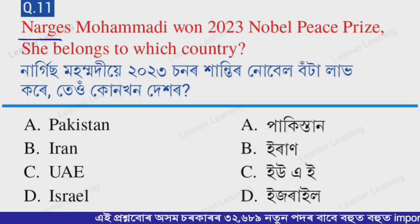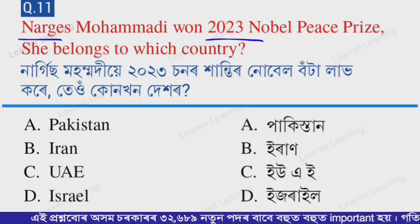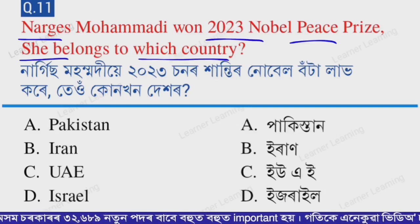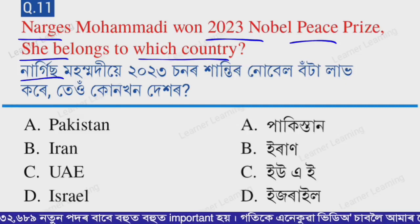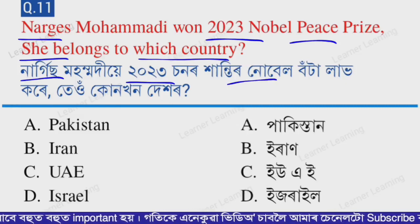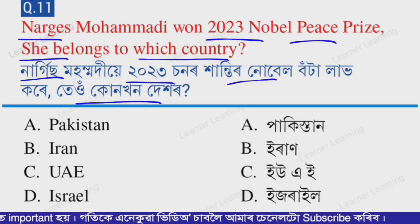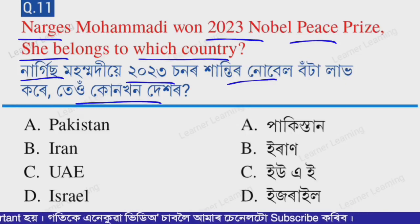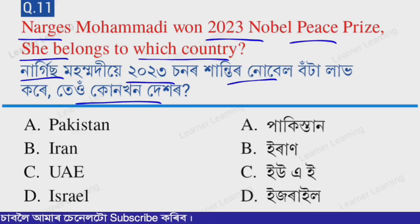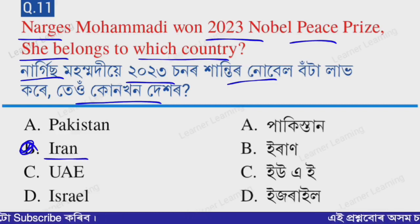Next question: Narges Mohammadi won the 2023 Nobel Peace Prize. She belongs to which country? Options: A — Pakistan, B — Iran, C — UAE, D — Israel. The correct option is option B — Iran. Narges Mohammadi belongs to Iran.